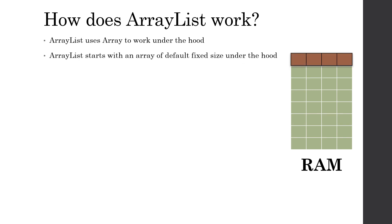When making a new ArrayList, we start by defining a new array at the low-level implementation. When we initialize an array, we need a fixed size. There is a default fixed size used under the hood when creating an ArrayList — that's the starting point.